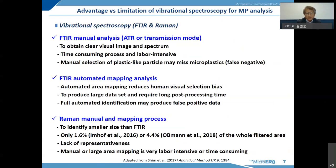In my previous review paper, I compared various analytical methods for microplastic analysis. Briefly, the key advantages and limitations are as follows. When using manual methods such as ATR or transmission mode, we can get very clear visual spectra. But when we target every single particle manually, it requires long time and is very labor-intensive. Also, manual selection of plastic-like particles leads to false negatives. FTIR automated mapping analysis really reduces human visual selection errors, but it produces a very large dataset requiring long post-processing time. Also, fully automated identification has a very high possibility of producing false-positive identifications.